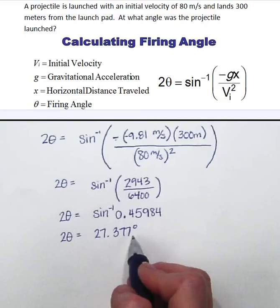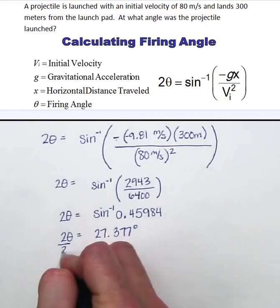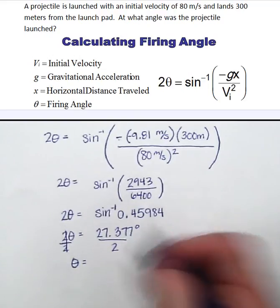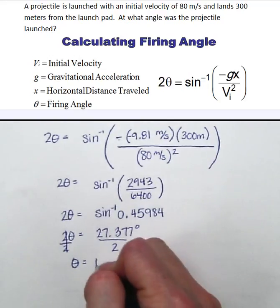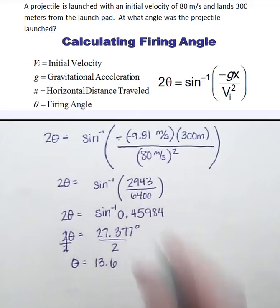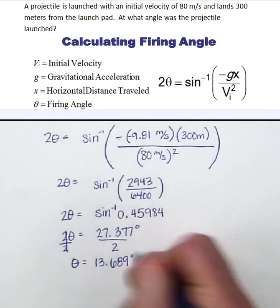I need to know just one theta so now I have to divide both sides by 2. Do not forget this step. And my final answer is the projectile was launched at an angle of 13.689 degrees.